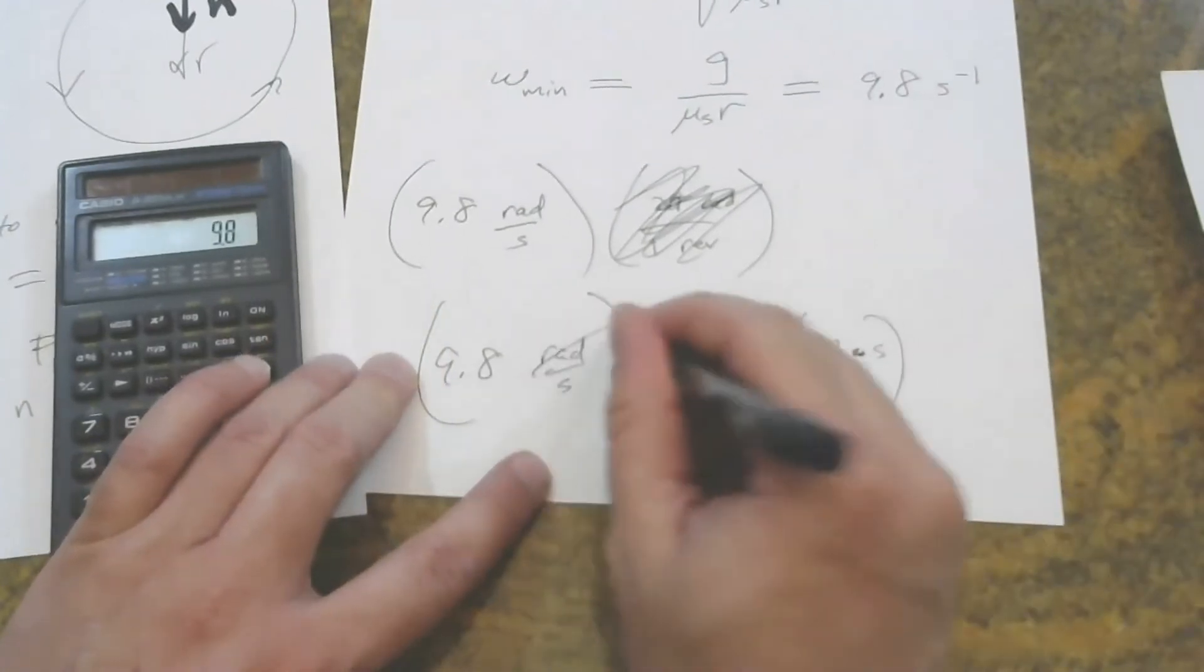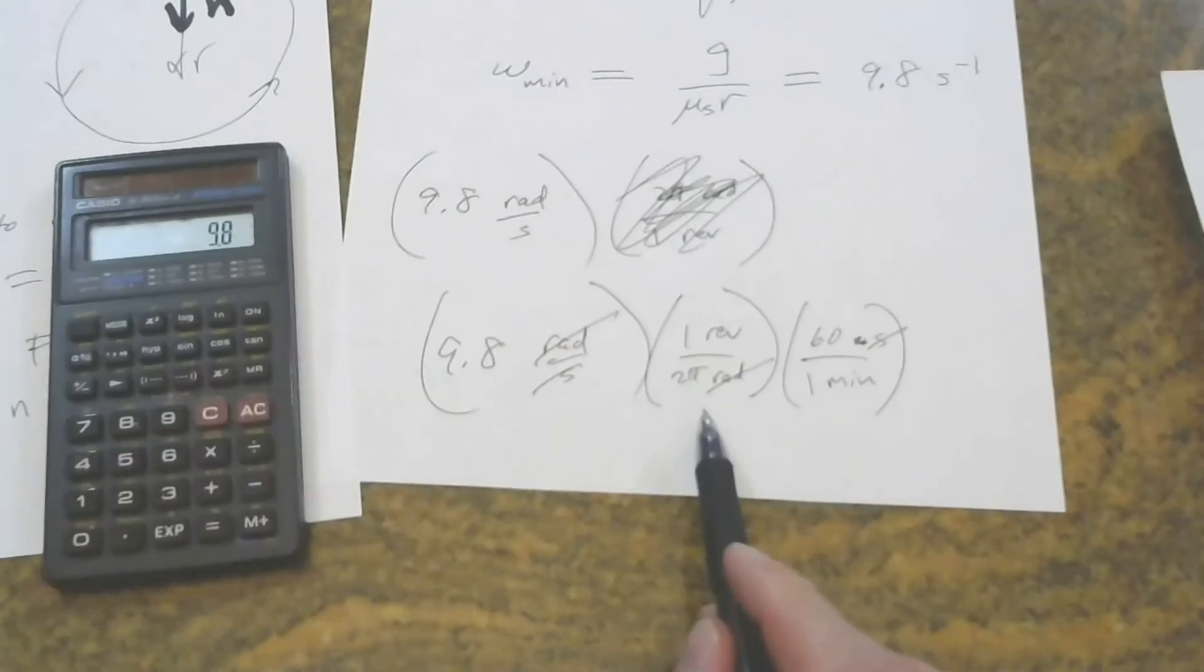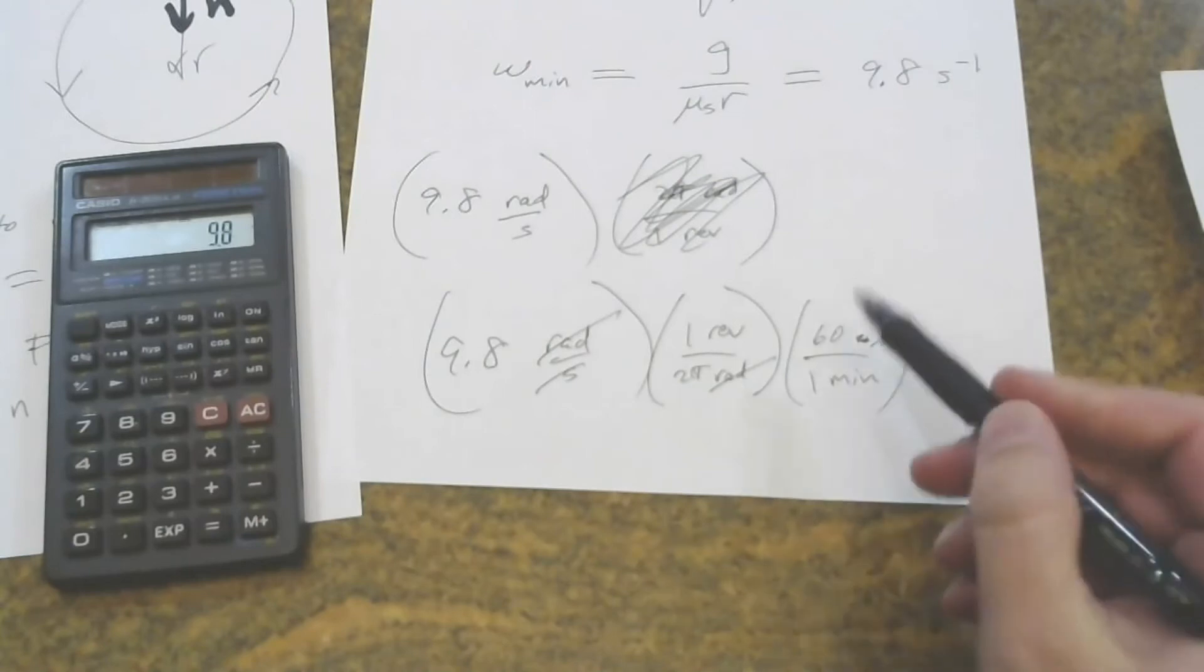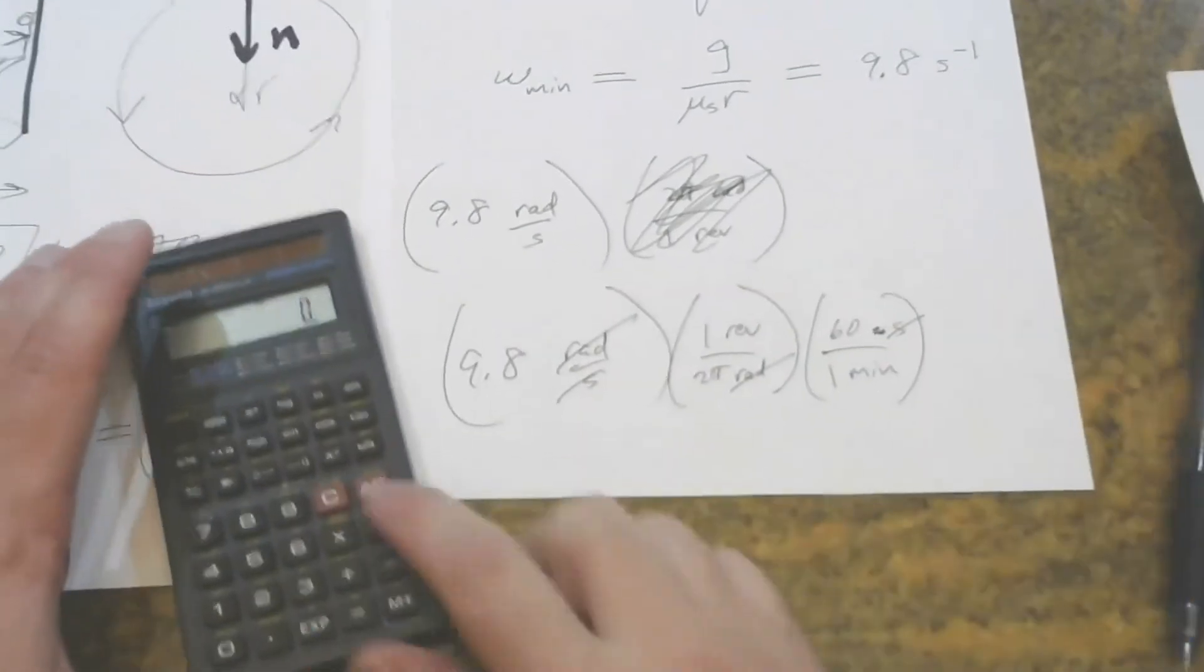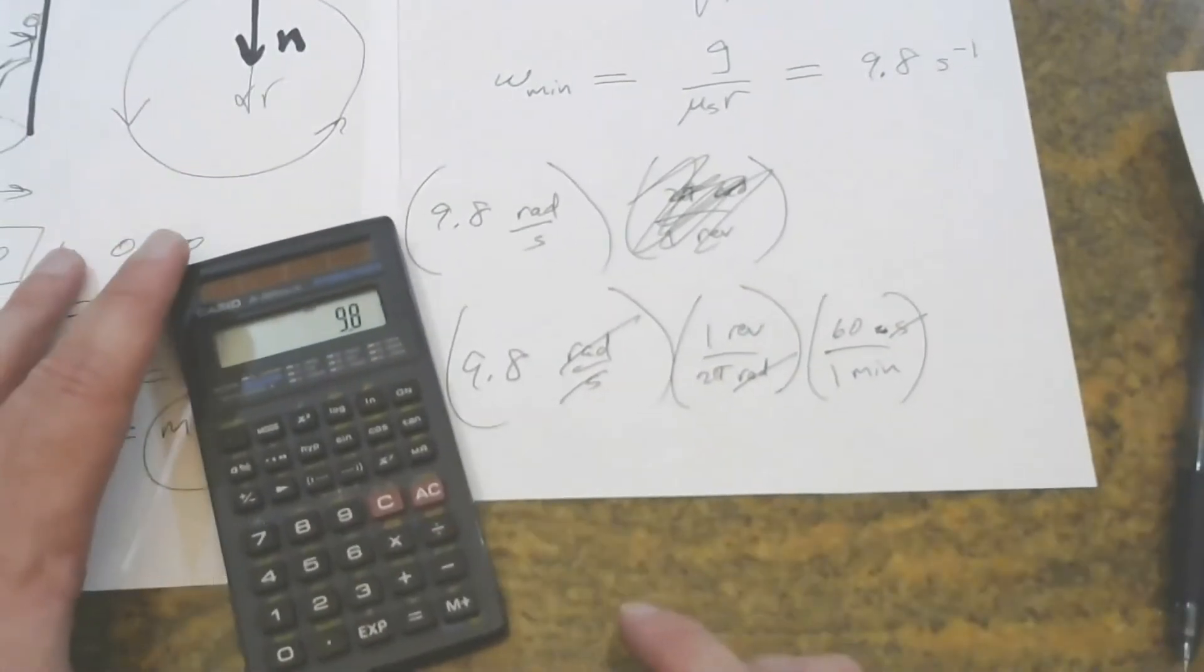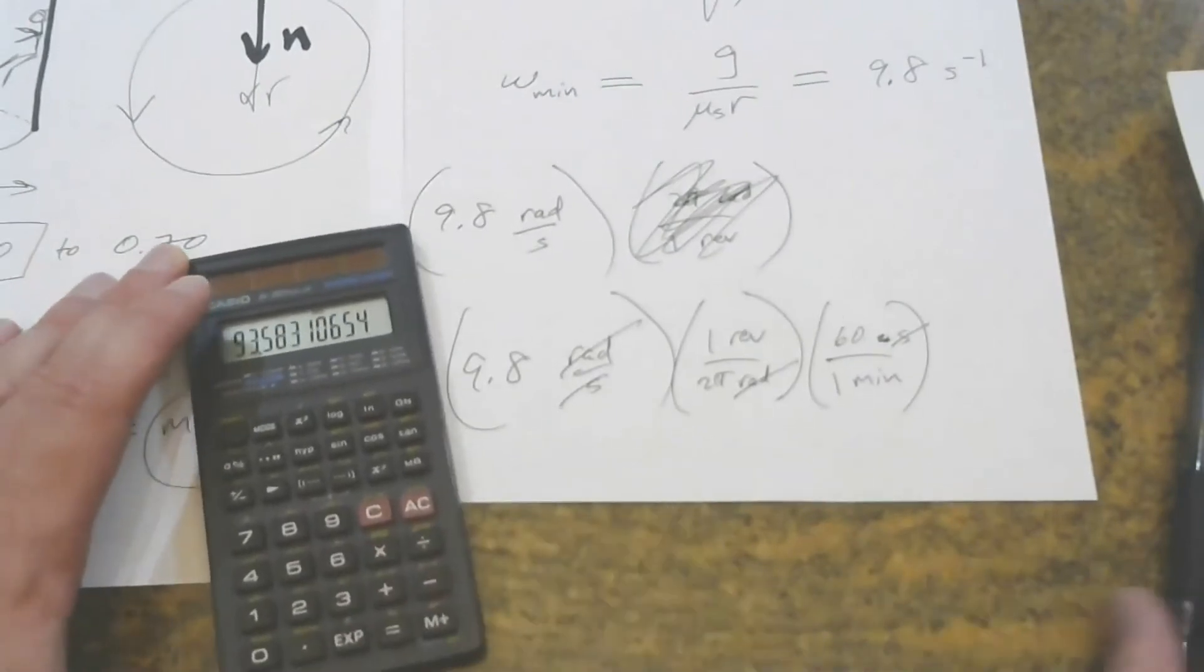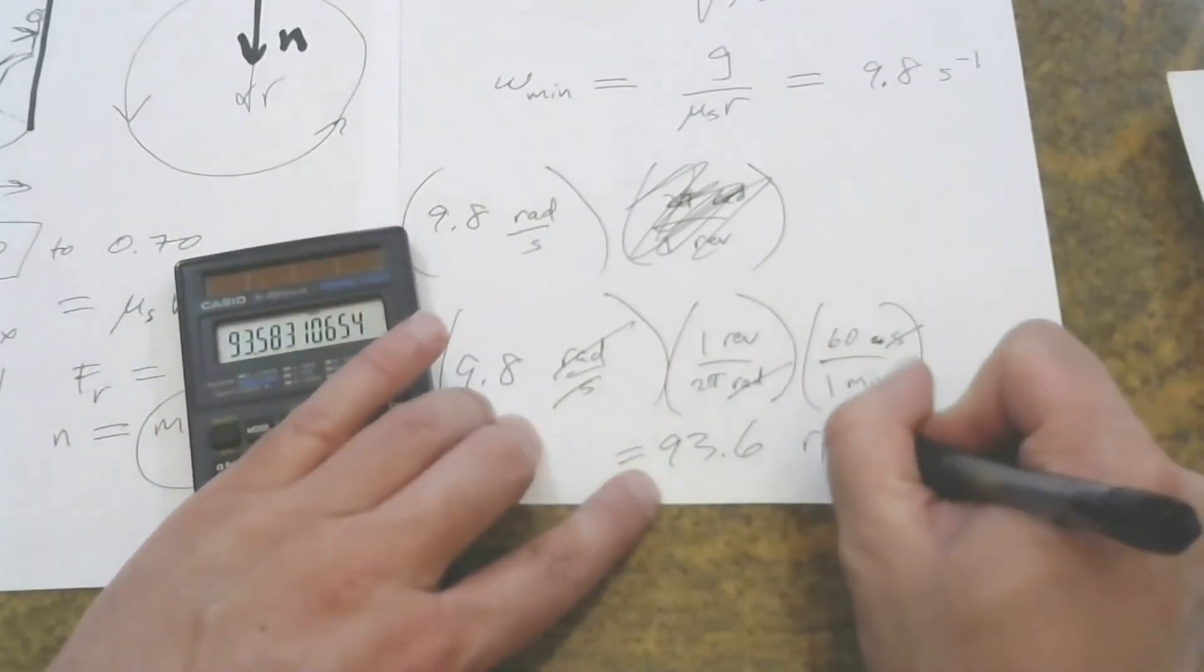And we see that radians cancel, seconds cancel, and the units come out as we'd like, revolutions per minute. And look here. 2 times pi, isn't that roughly 6? To the nearest integer, that would be 6. 60 over 6 is 10. So every 1 radians per second is about 10 rev per minute. You can just basically multiply by 10 if you're interested in just an approximate answer. I'll be a little more exact here. 9.8 divided by 2 divided by pi times 60. And this comes out to 93.6 rev per minute.